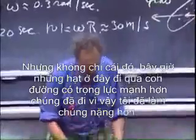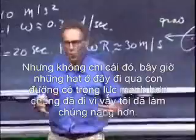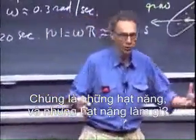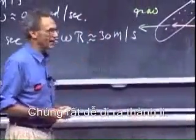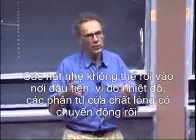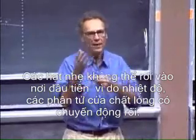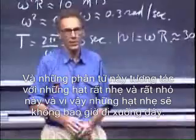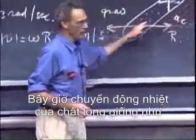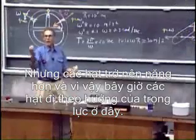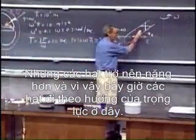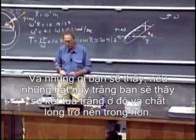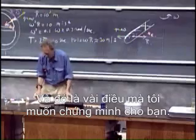Not only that — the particles now experience far stronger gravity than before, so I have made them effectively heavier. They are no longer light particles; they are heavy particles. The reason the light particles couldn't settle originally is that the liquid molecules, due to their temperature, have chaotic thermal agitation, which keeps the small, light particles suspended. Now the thermal agitation is the same — temperature hasn't changed — but the particles have become way heavier. So the particles now move in the direction of effective gravity. If these particles are white, you will see white precipitation on that side, and the liquid will become clear.